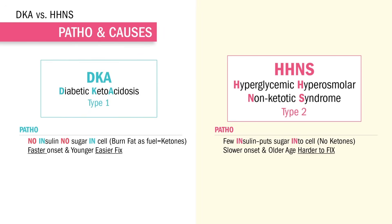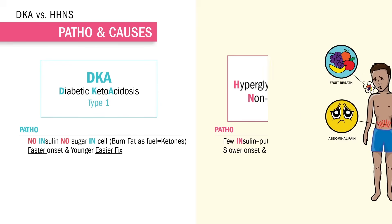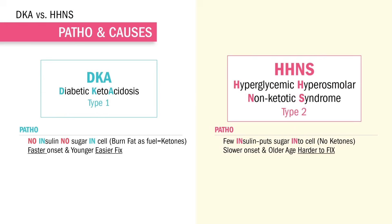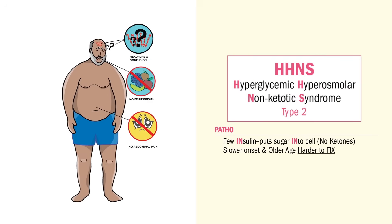Typically, DKA has a faster onset and is consequently easier to fix, since the patients are young with type 1 diabetes. HHNS is a slower onset with older patients, so it's harder to fix.